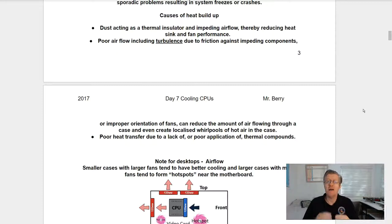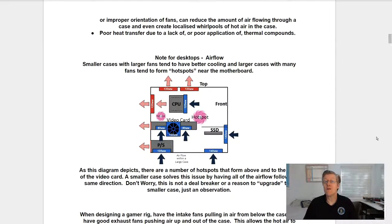Causes for heat buildup. Dust acting as a thermal insulator and impeding airflow thereby reducing heat sink and fan performance. Poor airflow including turbulence due to friction against impeding components or improper orientation of fans can reduce the amount of air flowing through a case and even create localized whirlpools of hot air in the case. Poor heat transfer due to the lack of or poor application of thermal compounds.